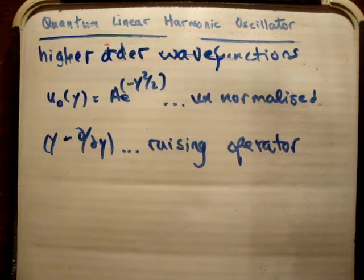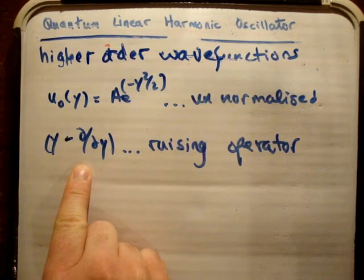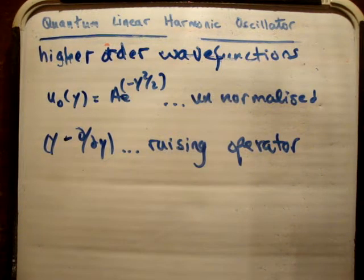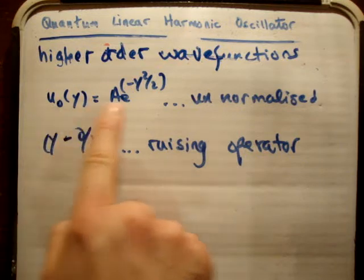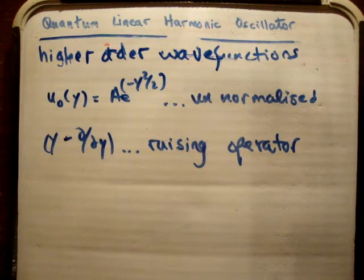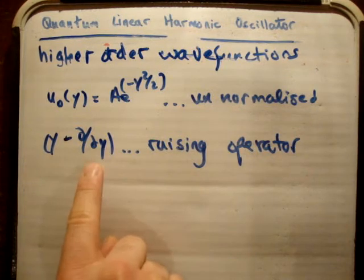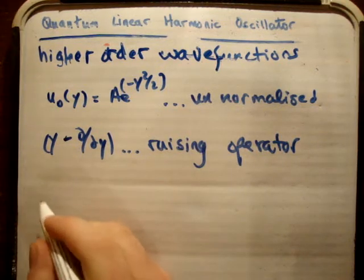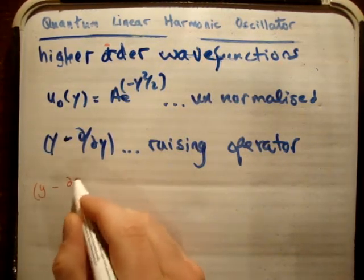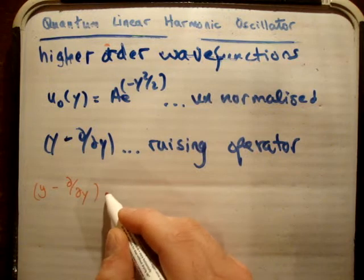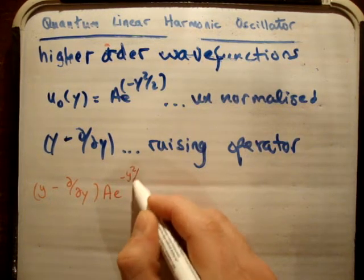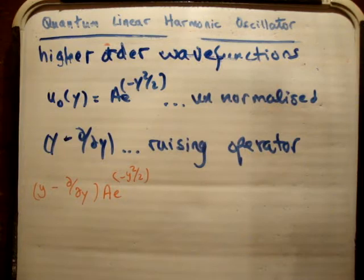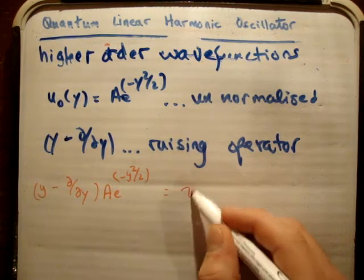What I'm going to do now is: we know that (y - d/dy) is a raising operator — it will give me an energy one unit higher than the previous energy. We know that this wave function, un-normalized, is the zeroth-order wave function in my oscillator. So if I apply this raising operator on this wave function I should get the next highest wave function, which I'll call u1(y).